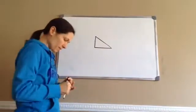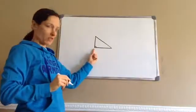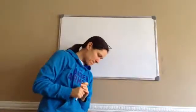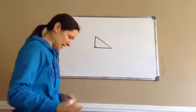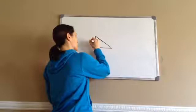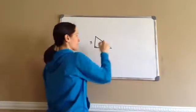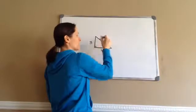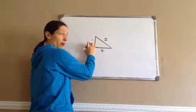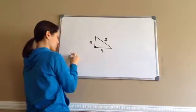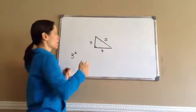It has to be a right angle, so I'm going to draw a perfect square in that corner. Now what the Pythagorean theorem says is this: let's say this side was 3 feet, this side was 4 feet, and this side was 5 feet. Pythagoras said that if I took the square of 3 — so 3 squared would be 9.